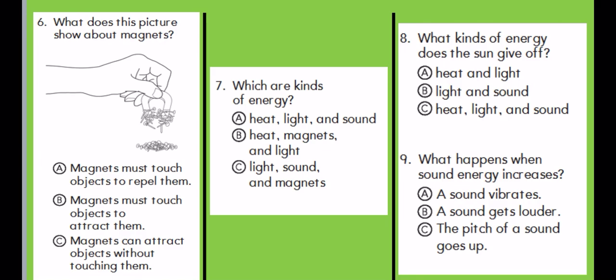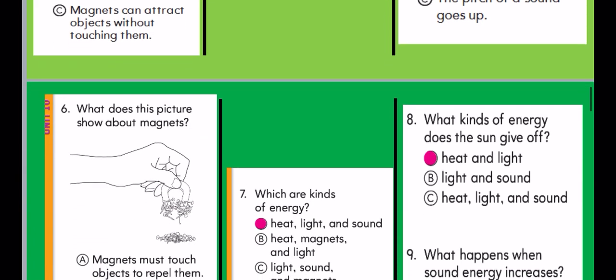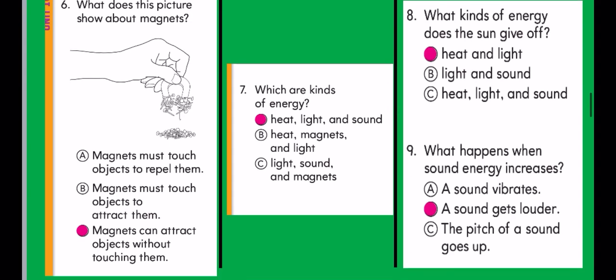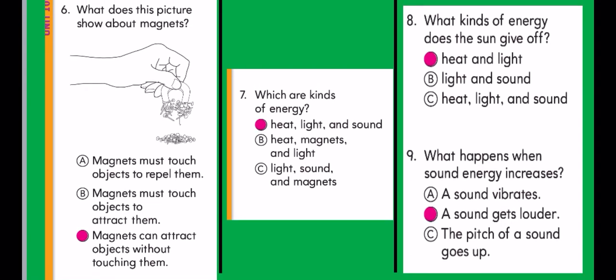Are you ready to see the answers? Let's see them. Number six. Definitely this picture showing that magnets can attract object without touching them. Of course, a magnet have a good field that, a magnetic field that can attract things without touching it. Excellent. Now, number seven. Which are kinds of energy? Definitely it's A, heat, light, and sound. And what kind of energy does the sun give off? Of course, it gives us heat and light. And the last one. What happens when sound energy increases? A sound gets louder. Definitely.